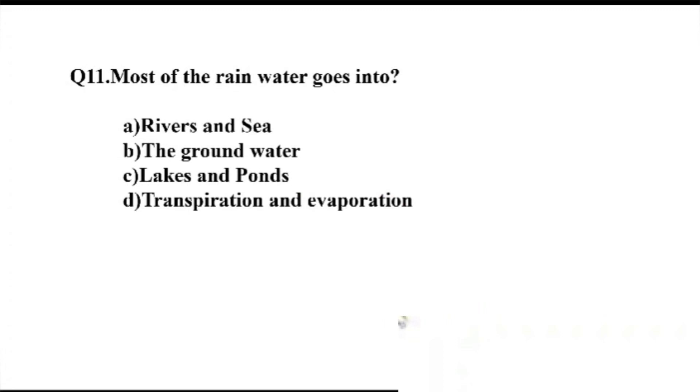Question number 11. Most of the rain water goes into dash. Option A, rivers and sea. B, the ground water, the lakes and ponds. D, transpiration and evaporation. The right answer, Option B, the ground water.